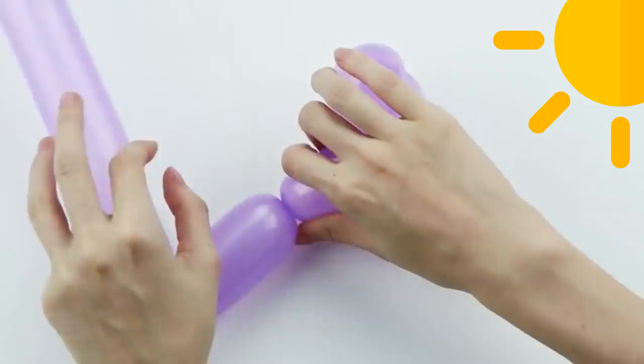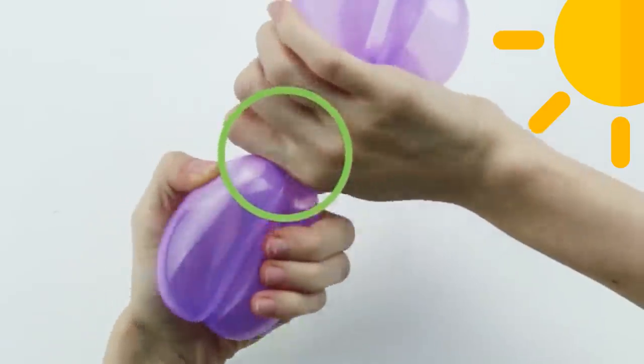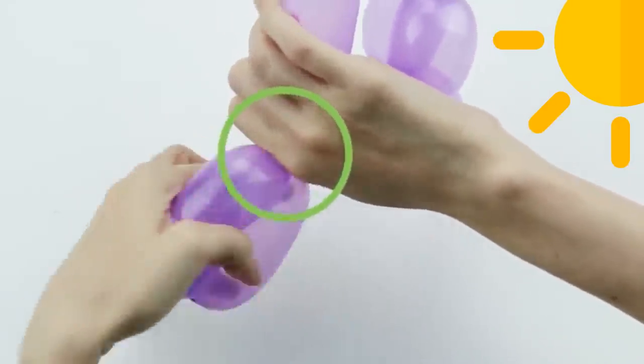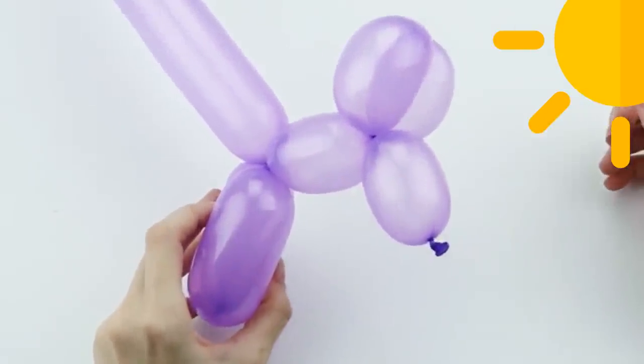Twist the leg segments together. Fold the balloon at the twist between the 2 leg segments. Grasp the leg segments with your free hand and twist them together 3 times at the base of the neck. The legs and neck are now locked in place.